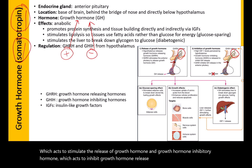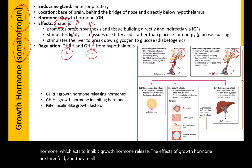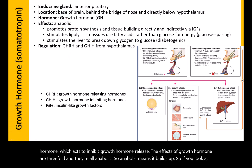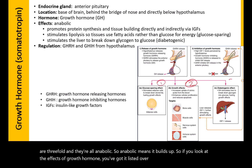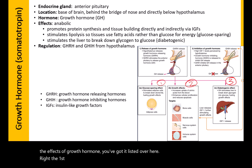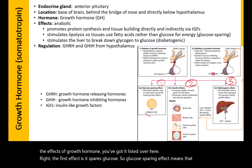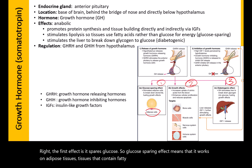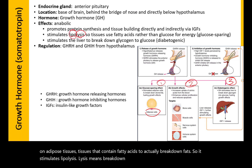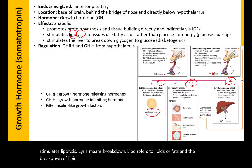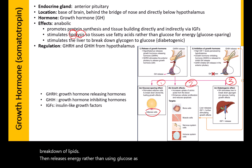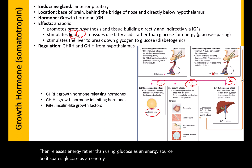The effects of growth hormone are threefold, and they're all anabolic — anabolic means it builds up. The first effect is it spares glucose. The glucose sparing effect means that it works on adipose tissues containing fatty acids to break down fats, stimulating lipolysis. Lysis means breakdown, lipo refers to lipids or fats. The breakdown of lipids releases energy rather than using glucose as an energy source, so it spares glucose and breaks down lipids to form new energy.